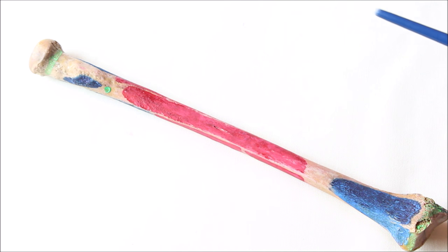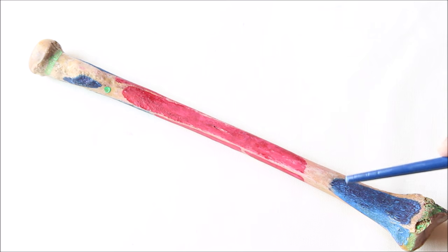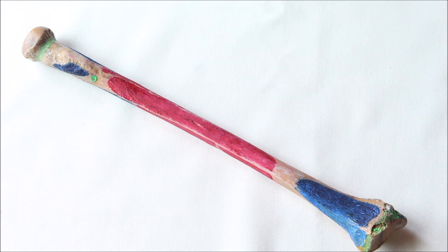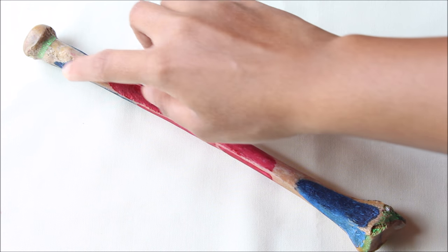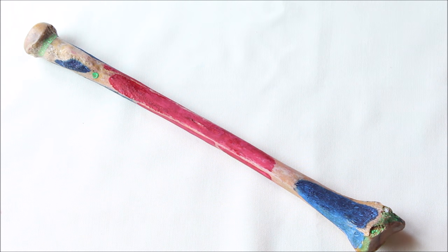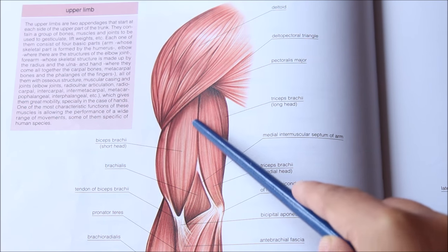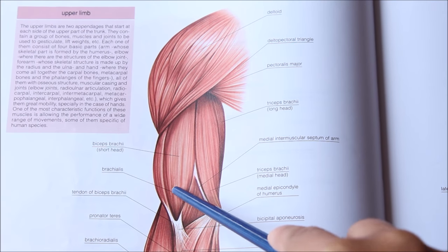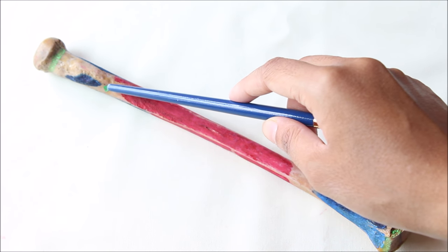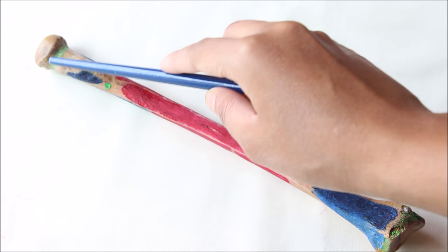Before starting with the attachments on the radius, please note that red symbolizes the origin of muscles, blue symbolizes the insertion, and green represents the attachments of ligaments and joint capsules. The rough posterior part of the radial tuberosity gives insertion to the biceps brachii, while the anterior part is covered by a bursa. The quadrate ligament is attached to the medial part of the neck of the radius, and the oblique cord is attached to the medial side just below the radial tuberosity.